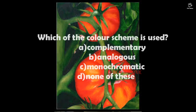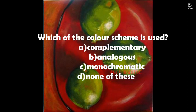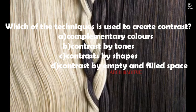The third question asks which color scheme is used in the painting. Options are complementary, analogous, monochromatic, or none of these. Here, the red contrasts with the green color in the background, and green fruits contrast with the red table. This contrast is made by using a complementary color scheme. The next question is also based on contrast — here contrast is given by varying tones: light tone with dark tone.